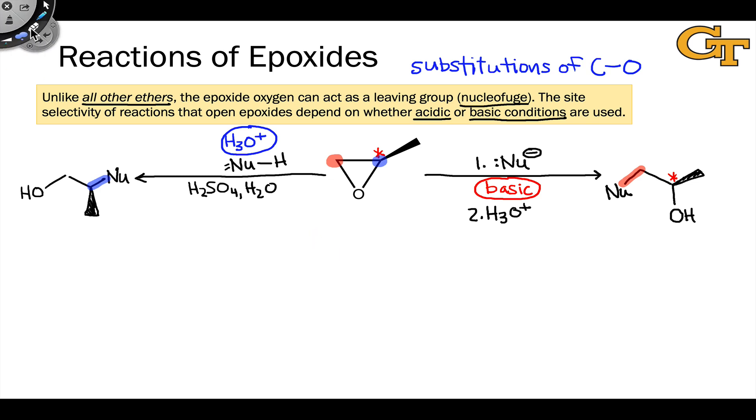Now we need to explain this, and as we've already seen a number of times throughout the course, the key to explanations in organic reactions is to think about mechanism. What intermediates, for example, are involved in this process? Well, let's focus on the acidic case first. In the presence of a strong acid like H3O+, the epoxide oxygen is going to do what it does best and become protonated, and we've seen this kind of reactivity for ethers already.